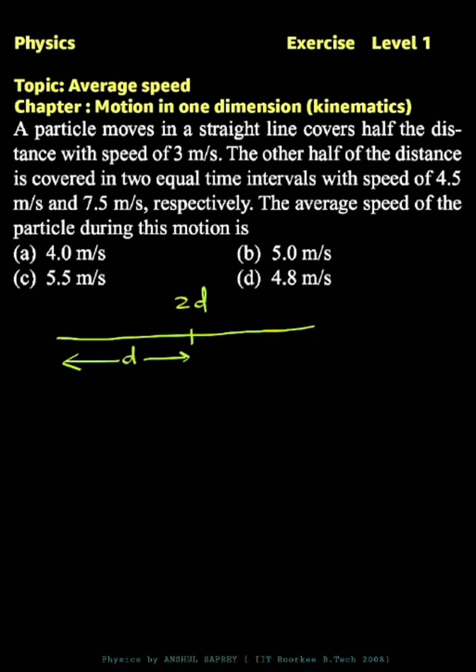is d. It is covered with average speed of 3 meters per second, so the time taken for the first half distance will be d by 3, which is distance by speed. Now the other half distance is covered in